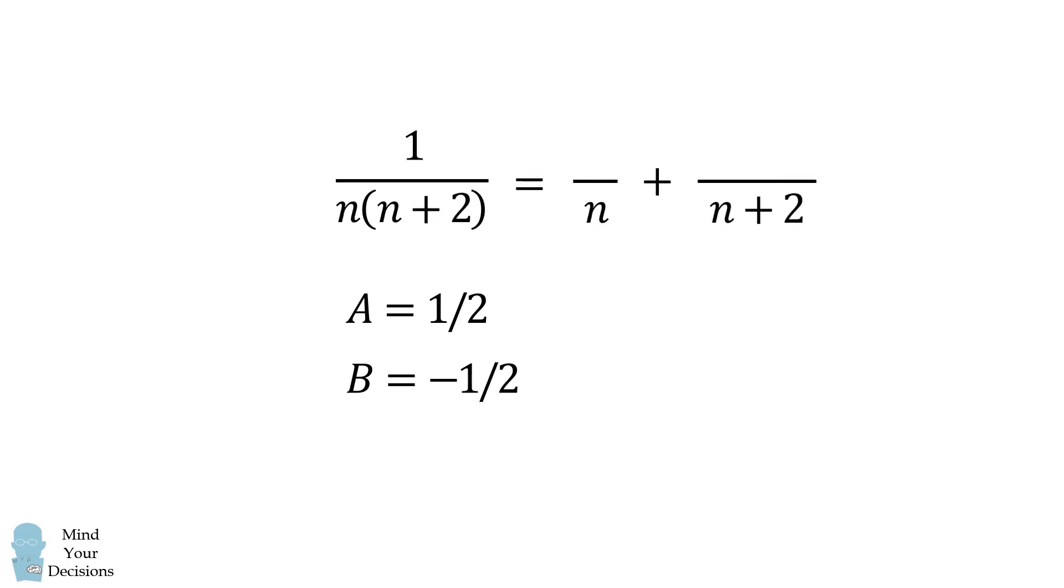We have now solved for the values of a and b. So let's substitute them in. We will further simplify that negative 1 half divided by n plus 2. With our partial fraction decomposition, we can proceed.